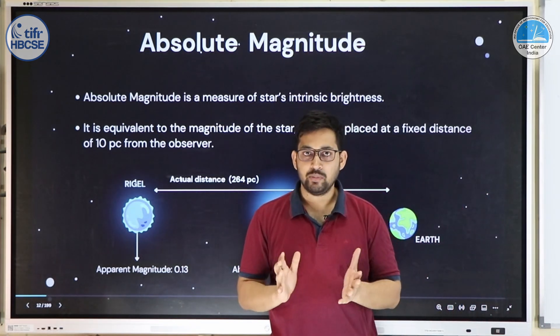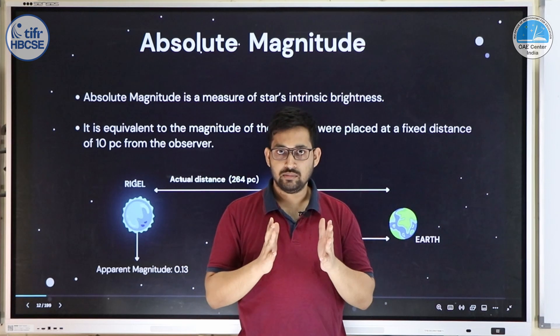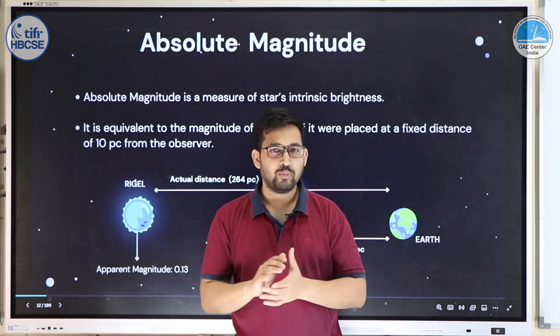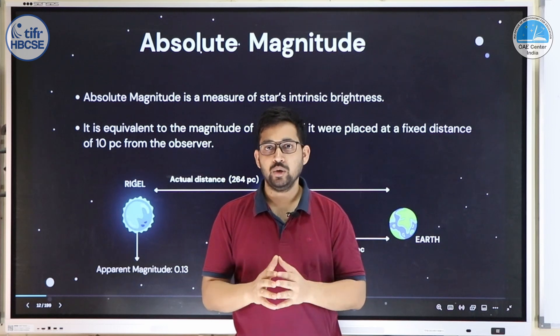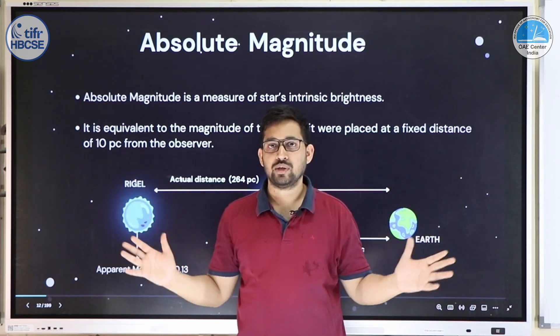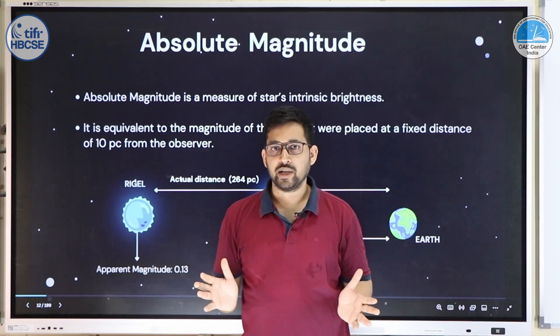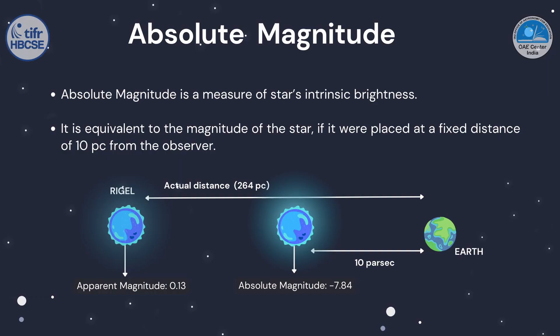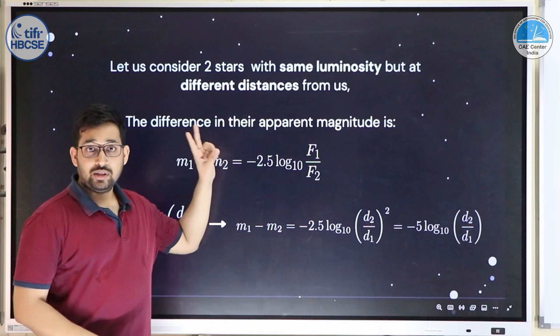Apparent magnitude can be misleading, so we define a quantity called absolute magnitude. We ask: what would the magnitude of a star be if it were placed at a standard distance of 10 parsecs (about 32.6 light-years)? By bringing all stars to 10 parsecs, we can compare their intrinsic brightness. For example, Rigel is about 264 parsecs away with an apparent magnitude of 0.13, but its absolute magnitude is −7.84.